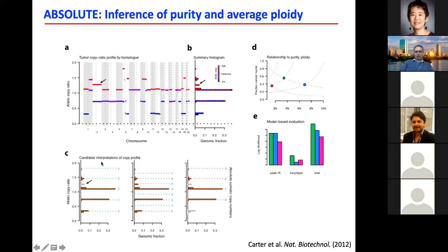This is the most likely fit, with these mutations or copy number changes being subclonal copy numbers — they're in between integer copy values. We use this method to estimate the purity and ploidy of different samples.